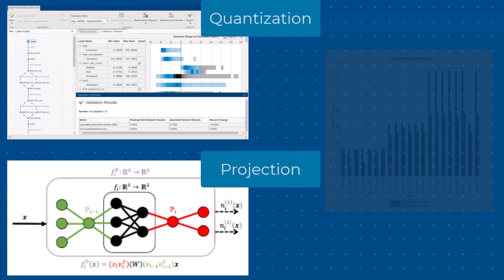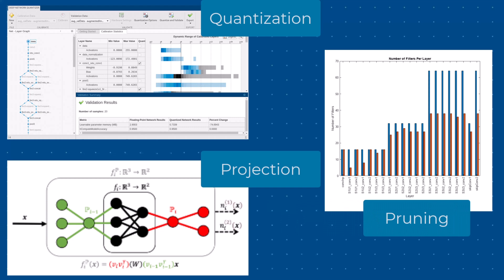You can compress neural networks with quantization, projection, or pruning. These methods reduce memory use and increase inference performance for deployment to resource-constrained devices.